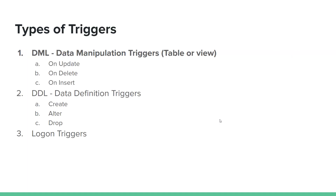Types of triggers: DML — data manipulation triggers — fire on insert, delete, and update operations. DDL — data definition triggers — fire when create, alter, or drop is executed.